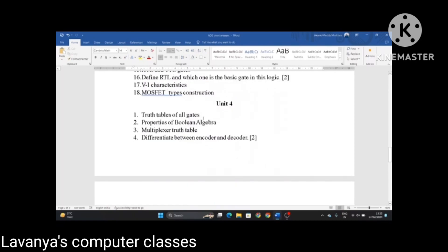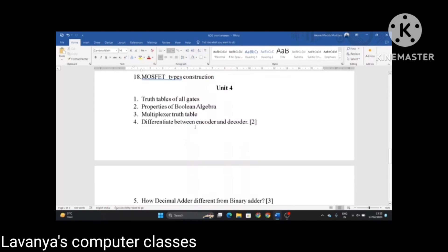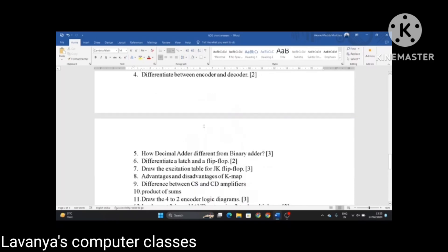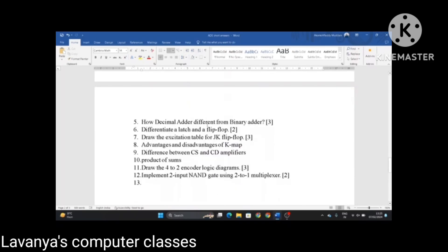Unit 4. Draw the truth tables of all gates, properties of Boolean algebra, draw the multiplexer truth tables, difference between encoder and decoder, very important question. How decimal adder different from a binary adder.